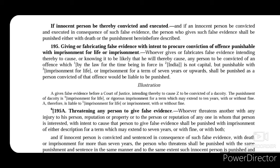Section 195 talks about giving or fabricating false evidence with intent to procure conviction of an offence punishable with imprisonment for life or imprisonment. If a person gives or fabricates false evidence intending the convicted person to be punished with imprisonment for life or any imprisonment, then this person who so fabricated or gave false evidence shall be imprisoned for life or for a term up to 7 years or upwards, and shall be punished as a person convicted of that offence would be liable to be punished.